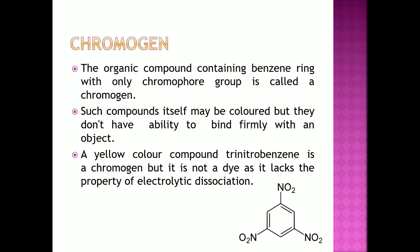Chromogen: The organic compound containing a benzene ring with only a chromophore group is called a chromogen. In chromogen, the oxochrome group is absent. Such compounds may themselves be colored but they do not have the ability to bind firmly with an object. A yellow compound, trinitrobenzene, is a chromogen but it is not a dye as it lacks the property of electrolytic dissociation.